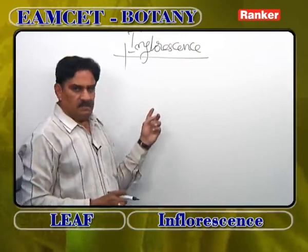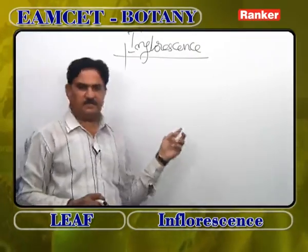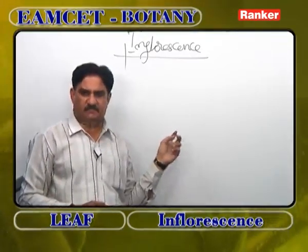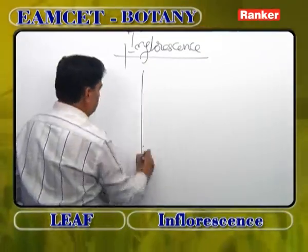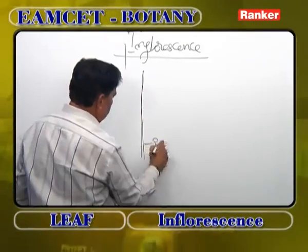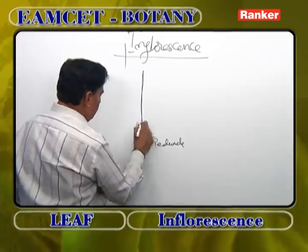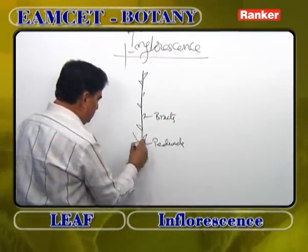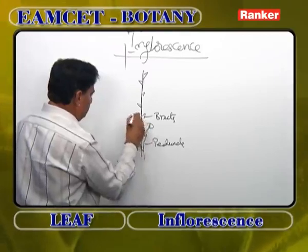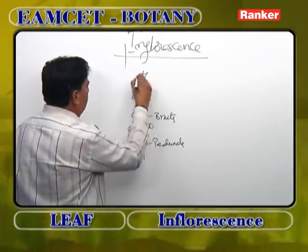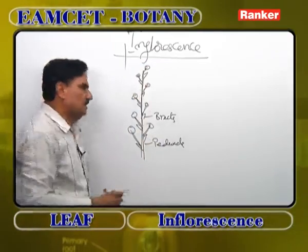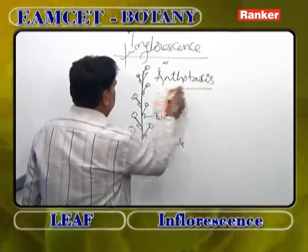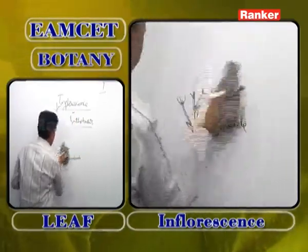What is inflorescence? The stem, after growing for some time, produces a special, weak, delicate branch called a peduncle. On the peduncle, small leaf-like structures called bracts are produced. From the axils of the bracts, either pedicellate flowers or sessile flowers are produced. This method of arrangement of flowers on the peduncle is called inflorescence or anthotaxis — the other name of inflorescence is anthotaxis.